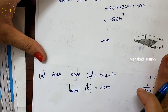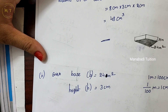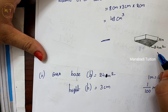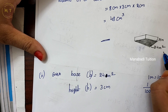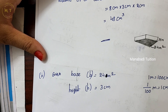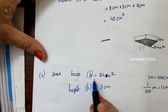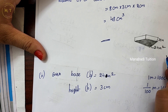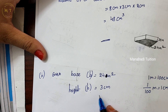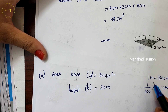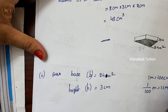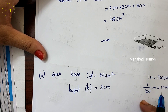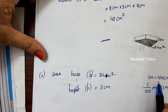Now the second problem. The base area is 24 square meters and the height is 3 centimeters. Since the units are different — 1 meter is equal to 100 centimeters — we will convert the height from centimeters into meters.